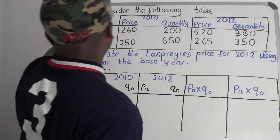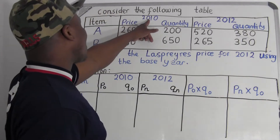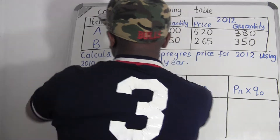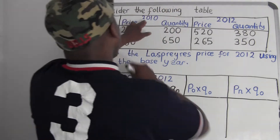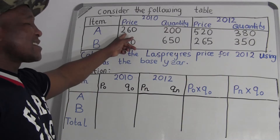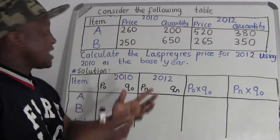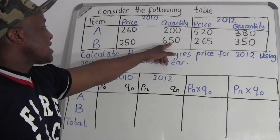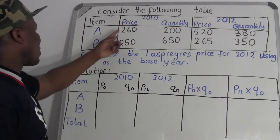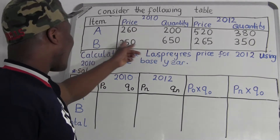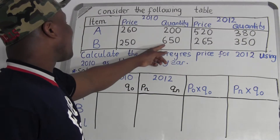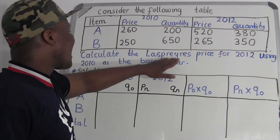Consider the following table — they give Item A and Item B with their prices. This will be the base price. They say calculate the Laspeyres price for 2012 using 2010 as a base year. So 2010 is the base year, meaning this will be the base price or initial price, and this will be the base quantity — 200 for Item A and 650 for Item B.